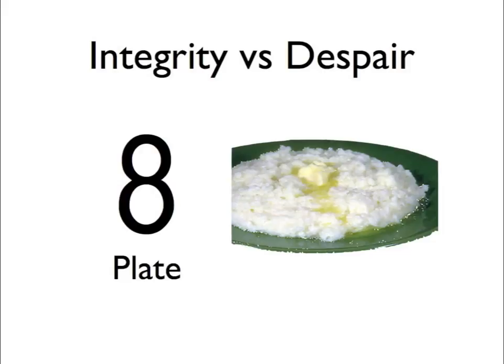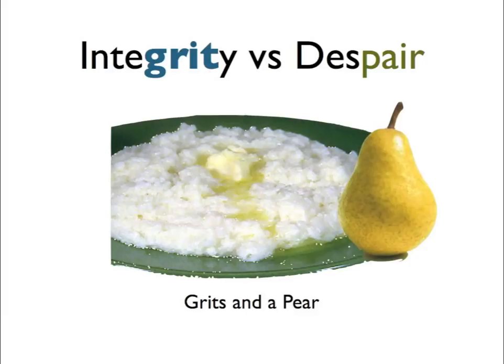The final one, number eight, is integrity versus despair. Eight is a plate. Let's put some grits on that plate — grits for integrity. For despair, let's put a pair there. So when we think of number eight and our plate, we put some grits on the plate and a pair right there, and we have it.